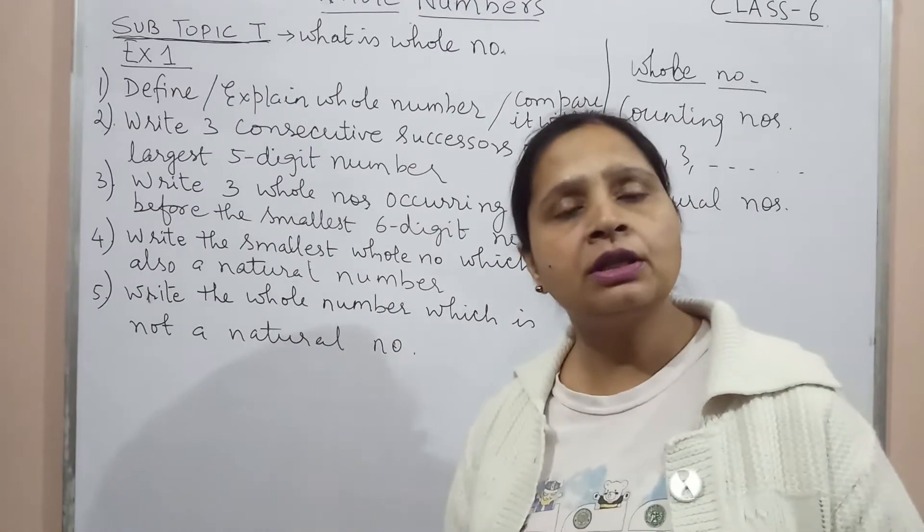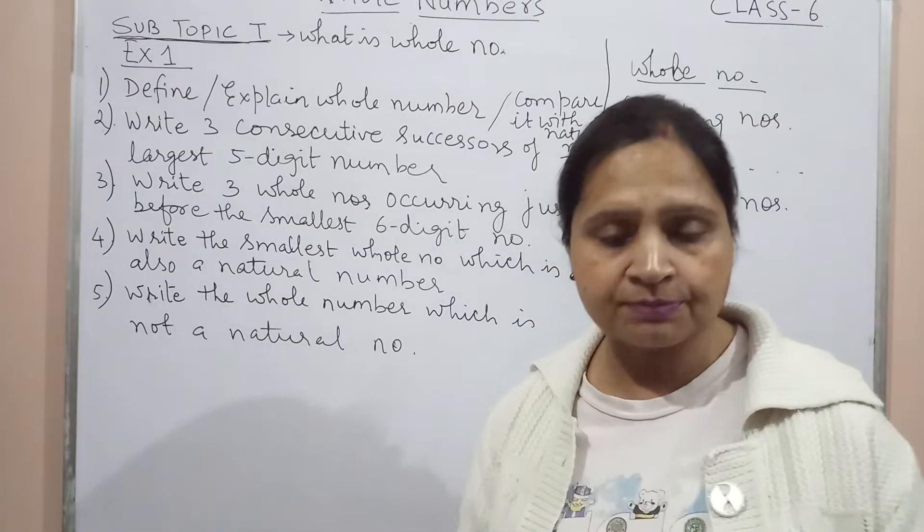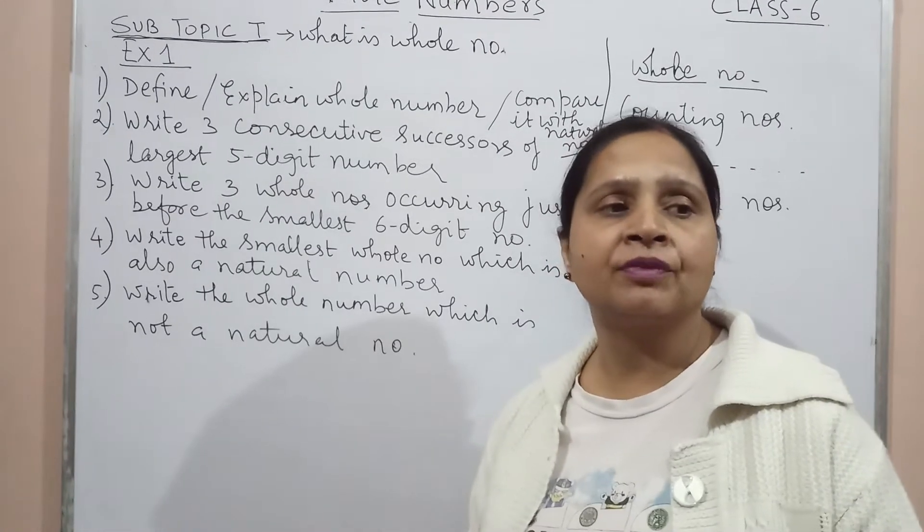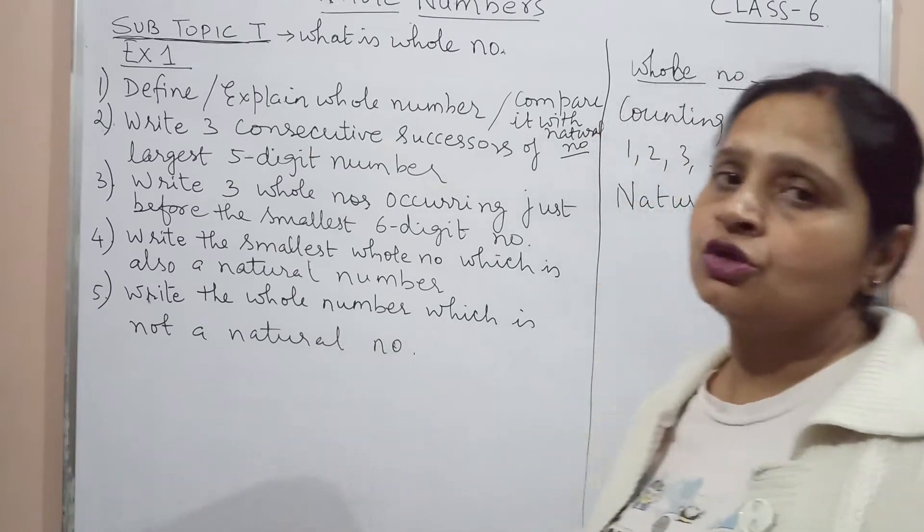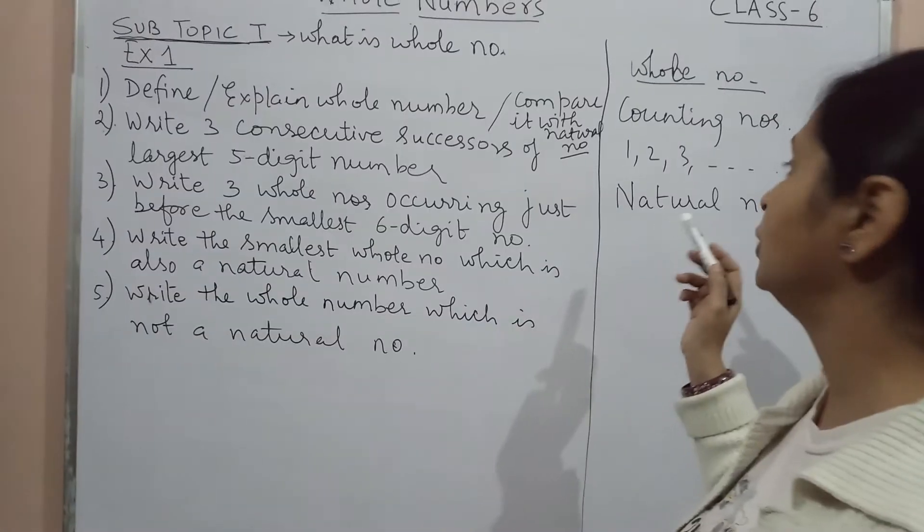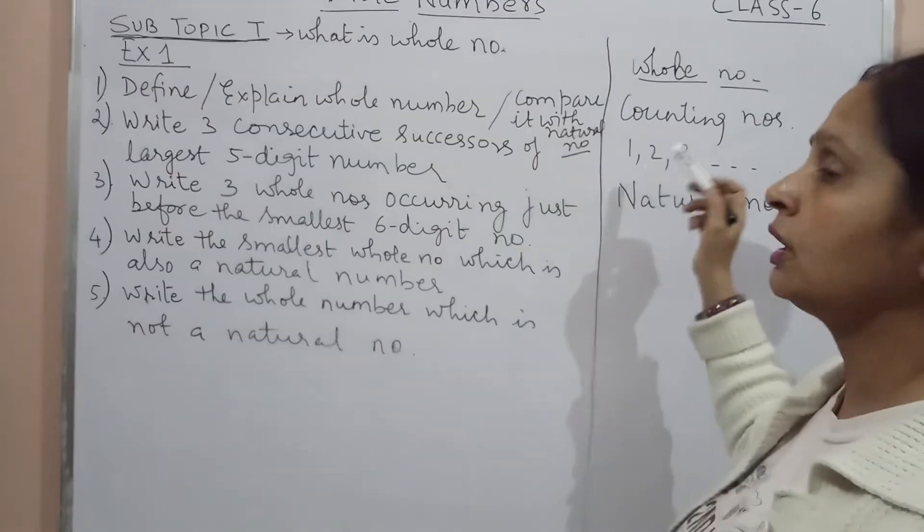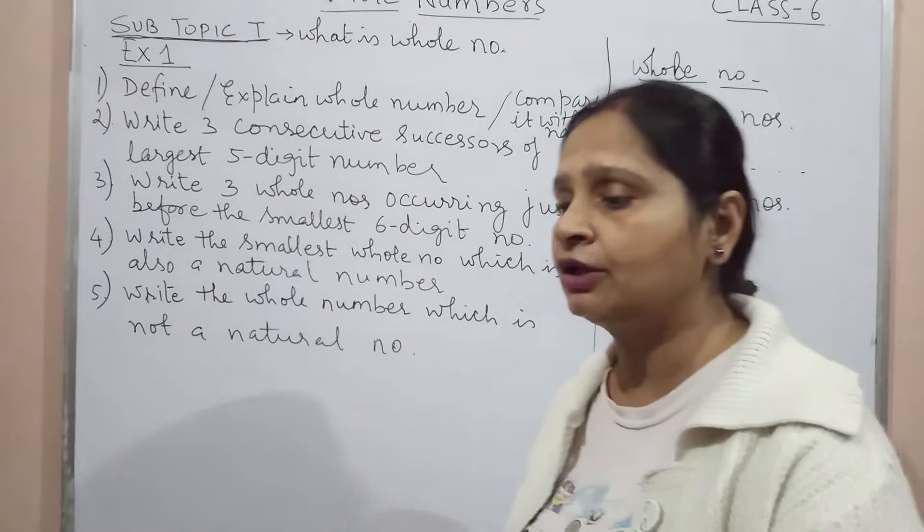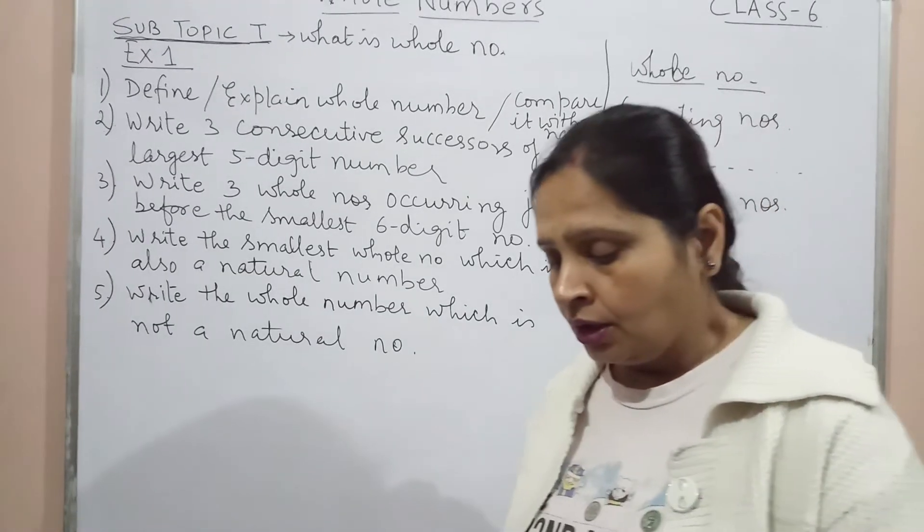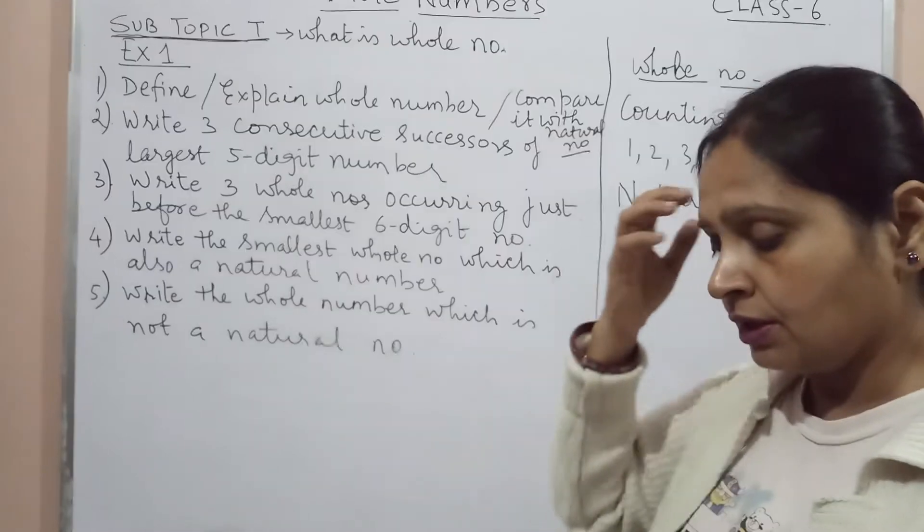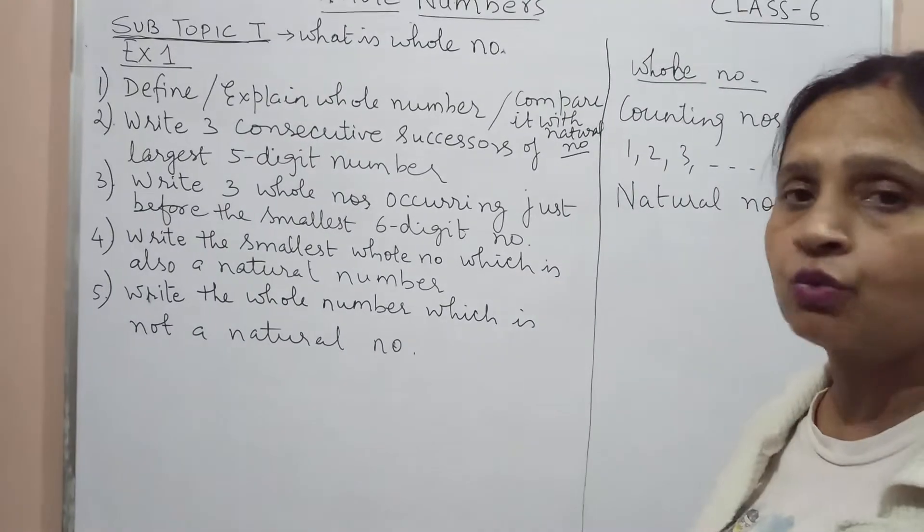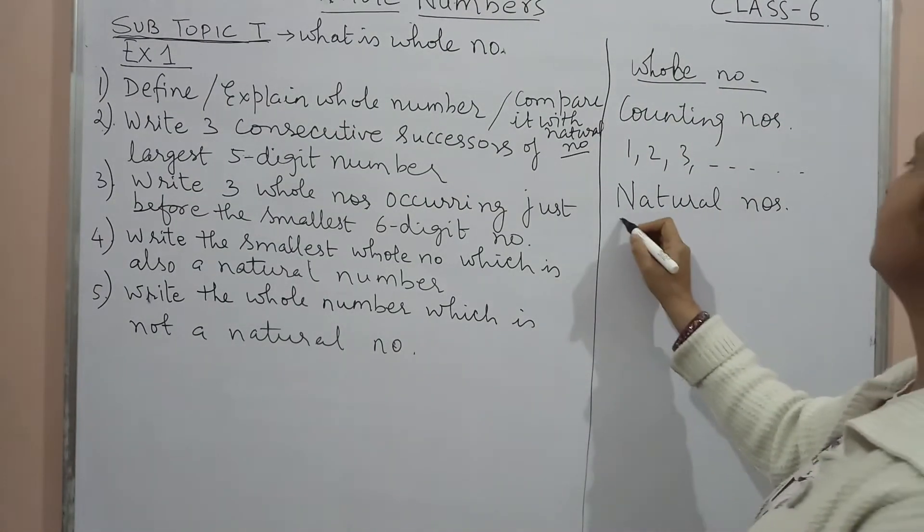Natural number ka matlab kya ho gya, they are all counting numbers. Jaise sabse pehle maths jab start hui hogi, we were in need of the numbers for counting few things. So obviously we wanted something which can help us in counting. Toh humlogo ne numbers generate kiya and those are called counting numbers. 1, 2, 8 saman rakha hai toh kitne hai, 15 rakhe hai toh kitne hai. So these numbers helped us to understand and to help develop maths, because that was very much required.